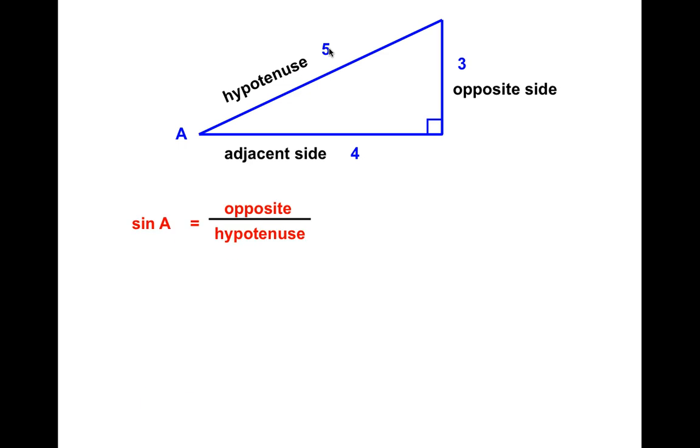Now, you need to memorize that the sine of an angle is equal to the opposite over hypotenuse. So in this case, the length of the opposite side is 3, and the length of the hypotenuse is 5. So the sine of angle A is 3 fifths.